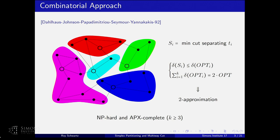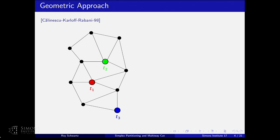They also showed that if you have three terminals or more, this problem is not only NP-hard but also APX-complete. This was the state of the art for quite some time, until the work of Calinescu, Karloff, and Rabani, which gave a completely different and elegant view of the problem, more geometric in nature.